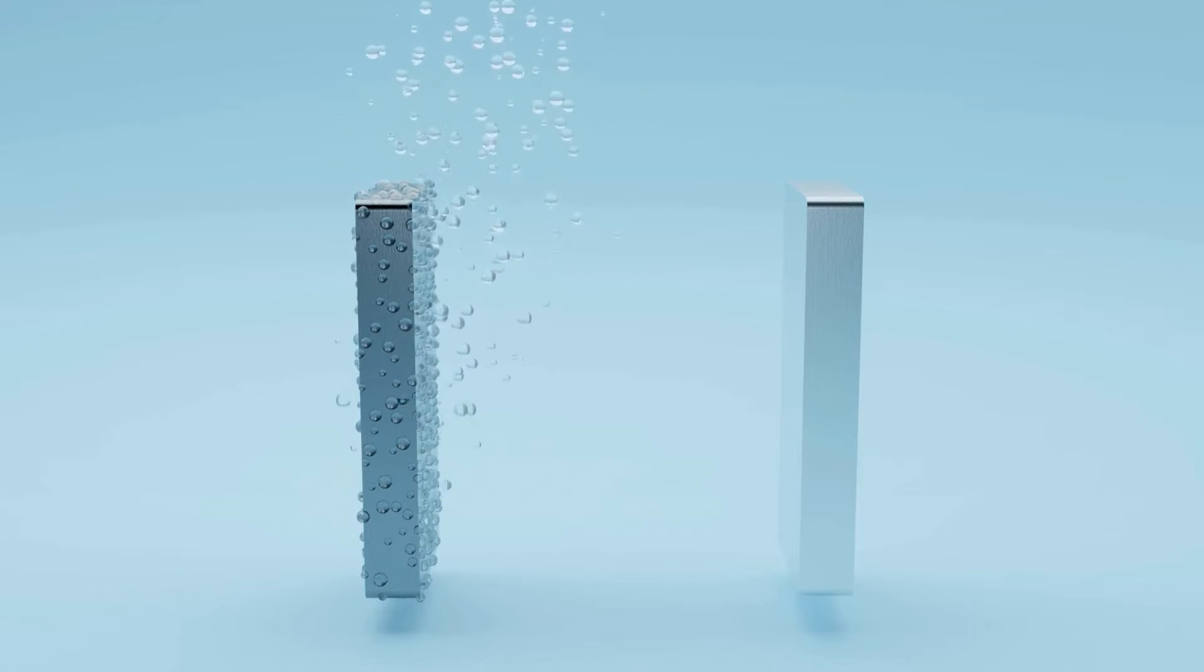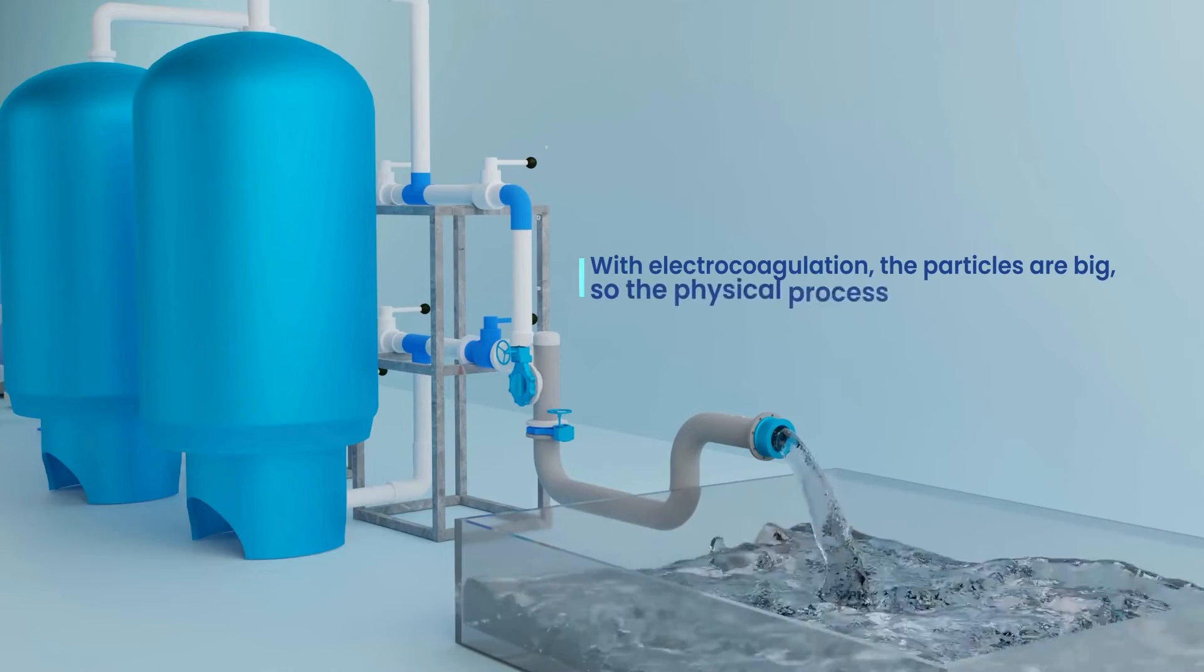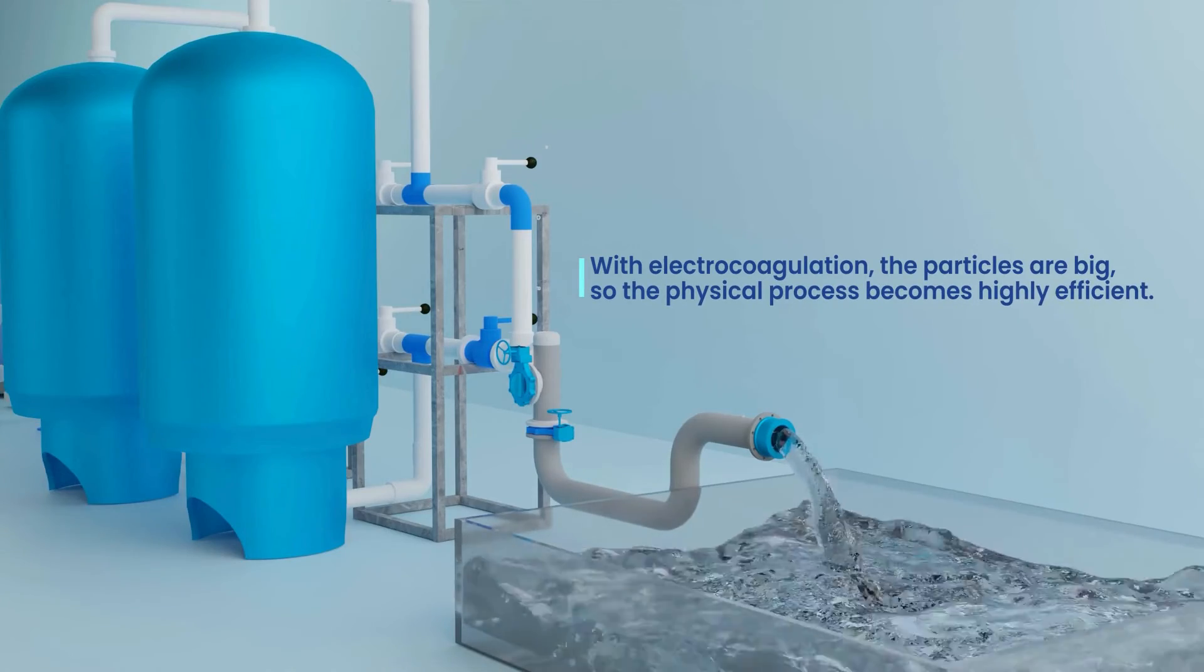These flocks are then lifted up by the produced gas bubbles. But we're not done yet. Filtration is the next step. With electrocoagulation, the particles are big, so the physical process becomes highly efficient.